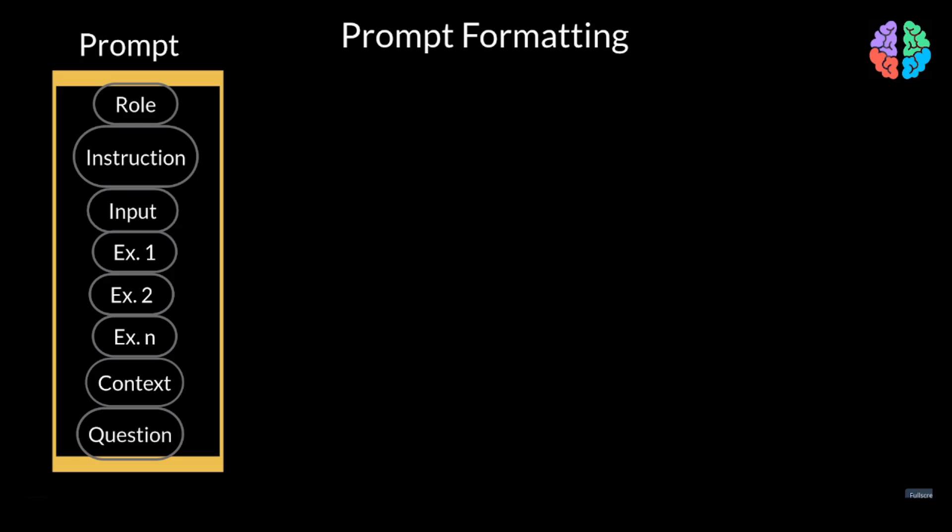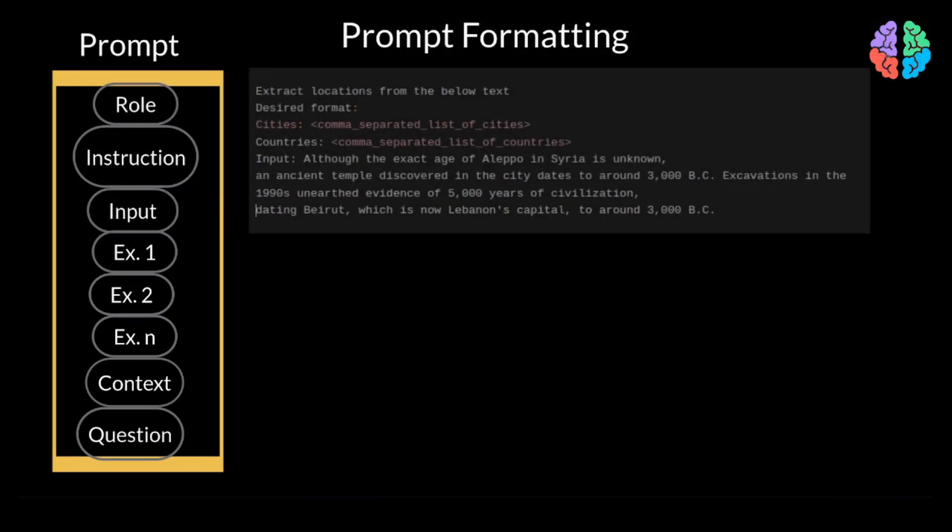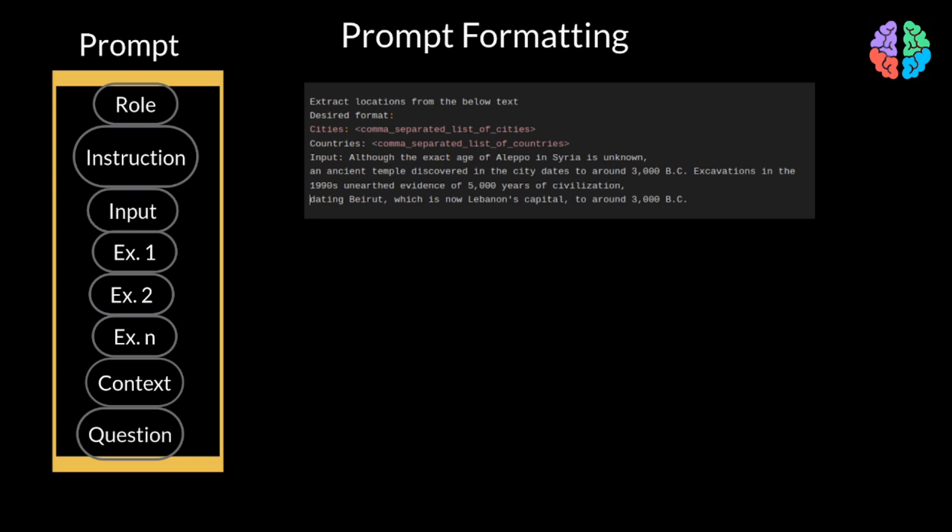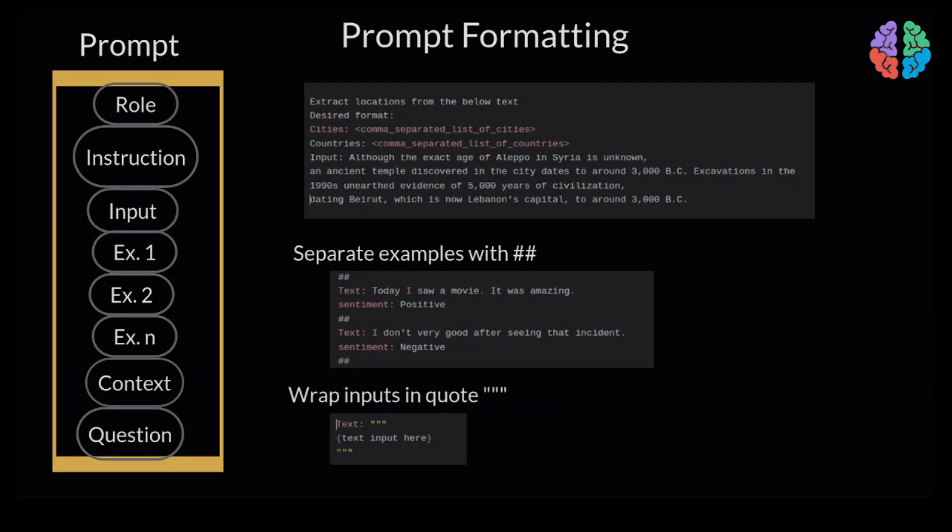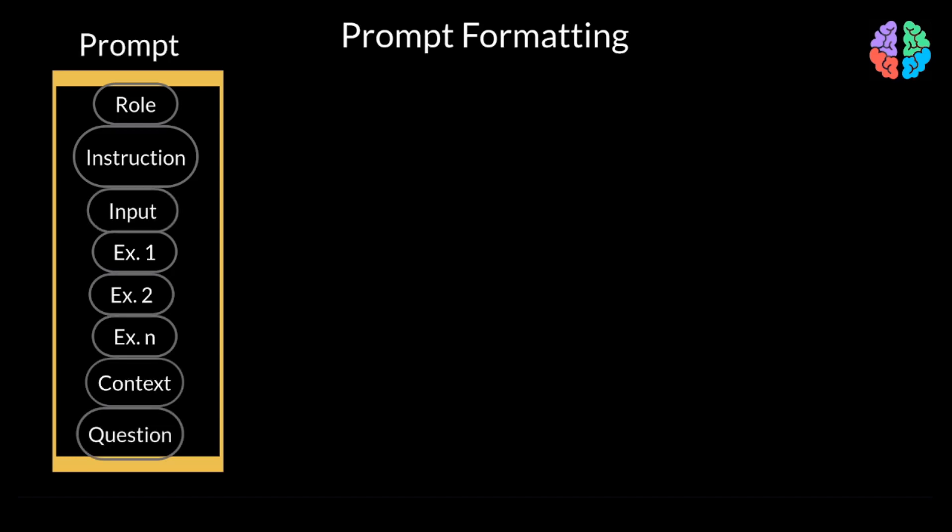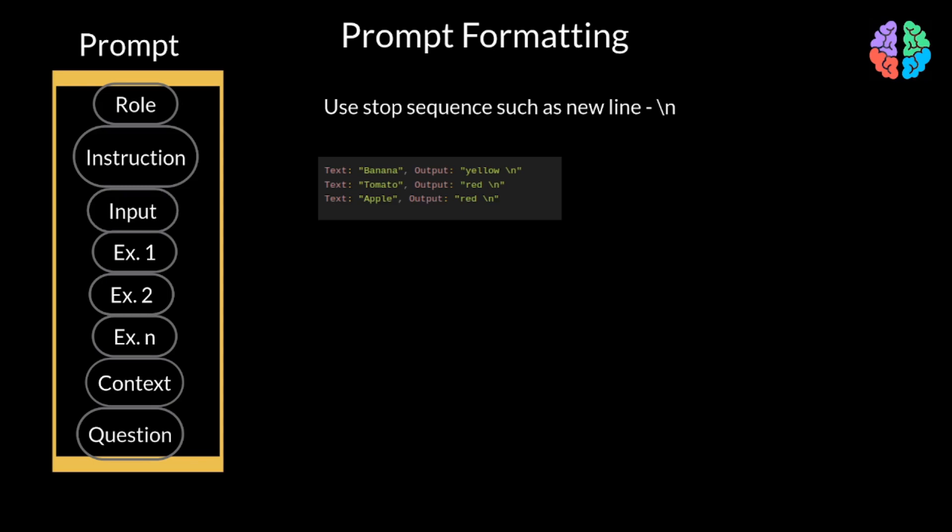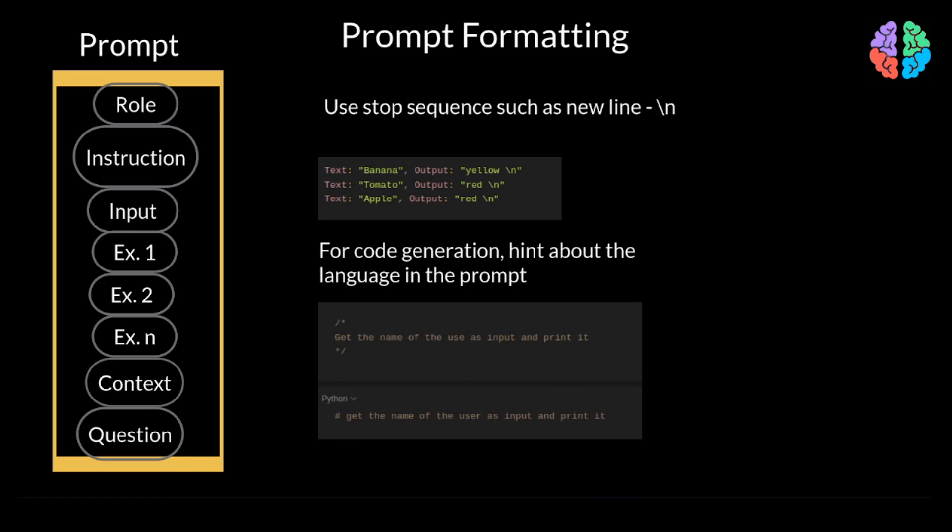Now that we have seen what constitutes a prompt, it's even better if we know how to format these prompts. For example, it's better to explicitly mention desired format and then actually provide the format. Similarly, for input or context, it's better to say input followed by a colon and then provide your input. When providing examples, it's better to separate them with a couple of hashes like in this example. If you're providing input, you may wrap it in quotes like this example. Then there's something called the stop sequence, which hints the model to stop churning out text because it's finished with the output. You may choose to stop sequence with any symbol of your choice, but new line seems to be the usual option here. If you're working with, say, code generation, it's better to provide comments according to the language you wish to see the output code to be generated in.